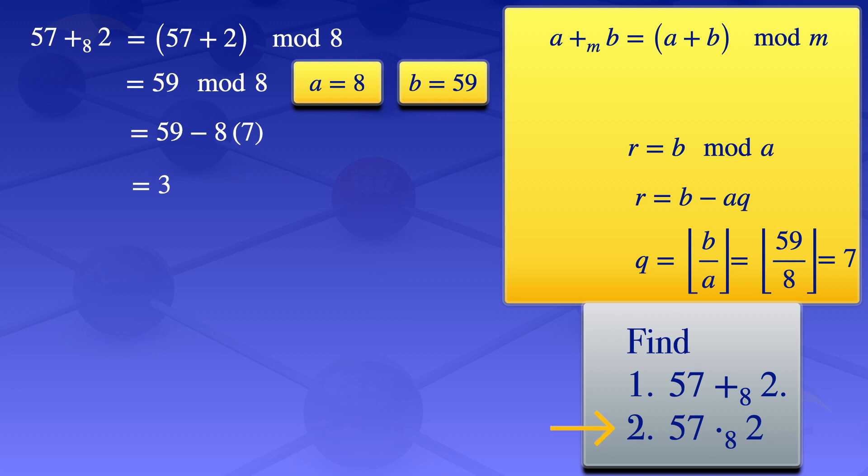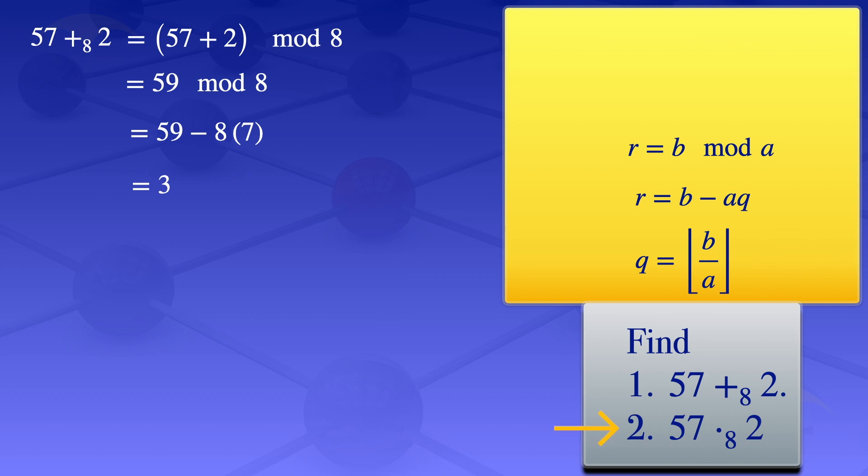I can now move on to the second question, 57 times 2 mod 8. By definition, a times b mod m equals a times b mod m. So we have 57 times 2 mod 8.